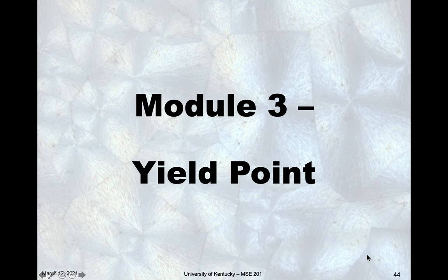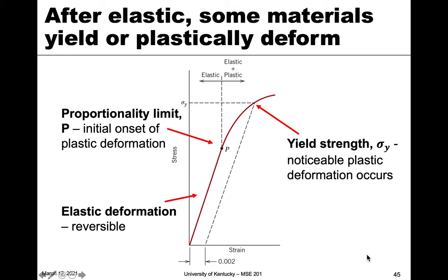We've just talked about elastic properties and now I want to move into what we term plastic properties — those are the ones that don't recover. The first module here is going to talk about the yield point. After elastic behavior, most materials undergo elastic deformation, which is the recoverable portion. Many of them, such as metals, have a linear elastic portion, and this is the elastic deformation region, which means reversible.